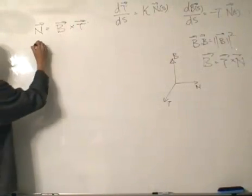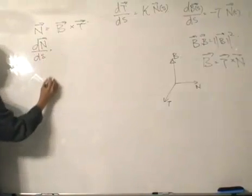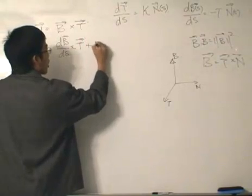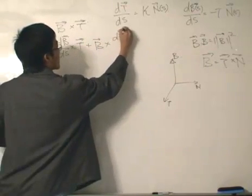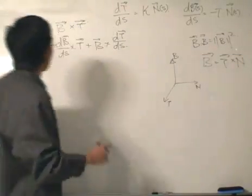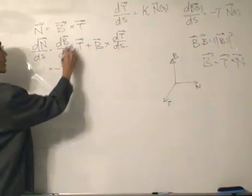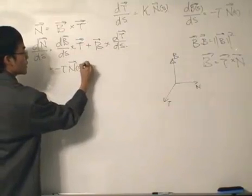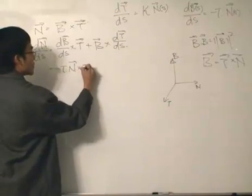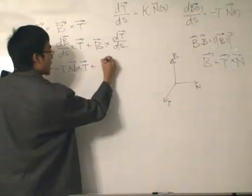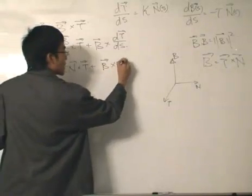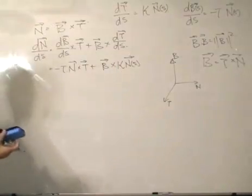Now let's take the first derivative. Using the chain rule, I differentiate B in terms of S crossed with the unit tangent vector, plus keeping the unit binormal and crossing it with the first derivative of the unit tangent. We have dB/ds already, which gives us minus torsion times the normal vector, crossed with the unit tangent. The binormal is kept, and crossed with dT/ds, which is kappa times the unit normal vector.